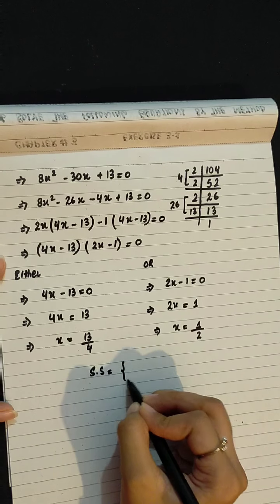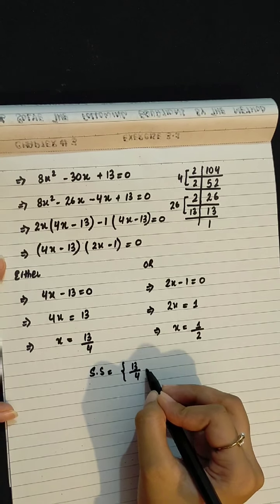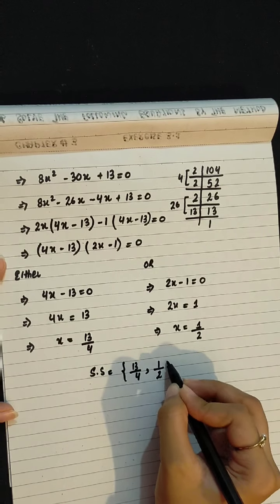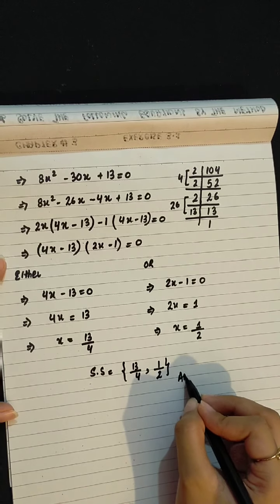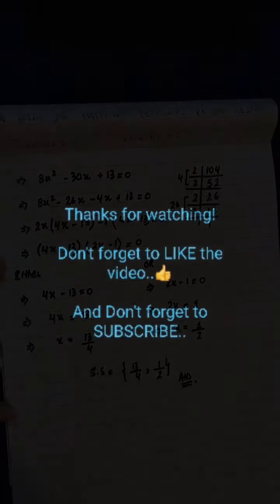Solution set equals to 13 over 4 comma 1 over 2. Thank you. Thanks guys. Stay tuned.